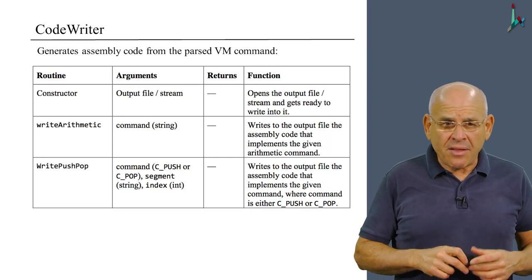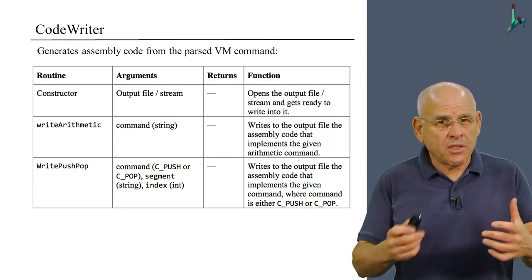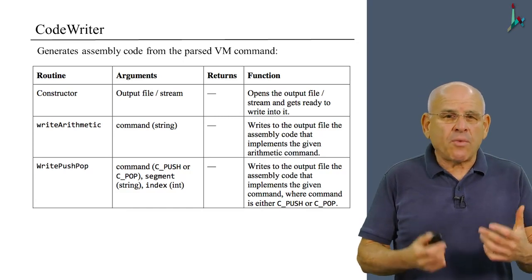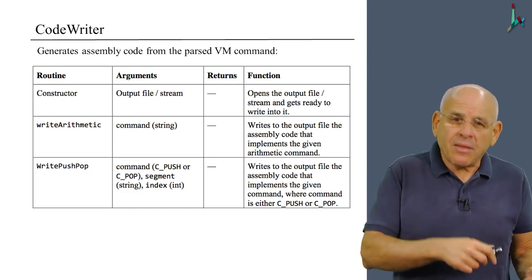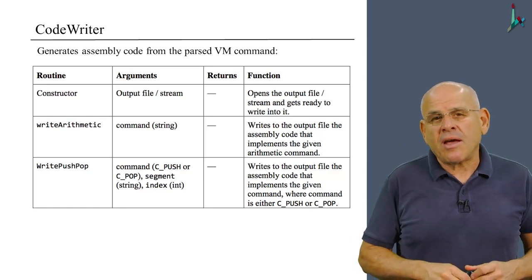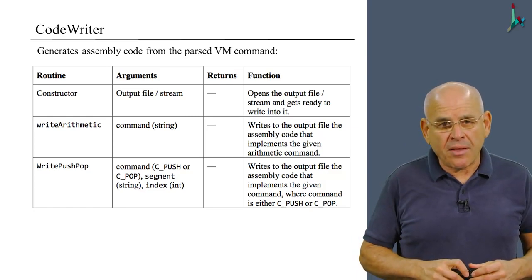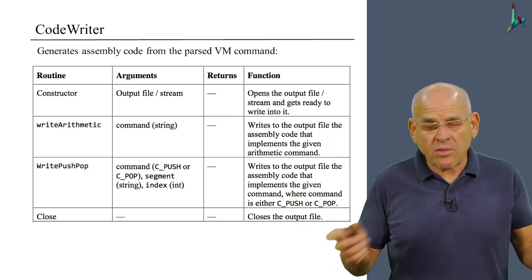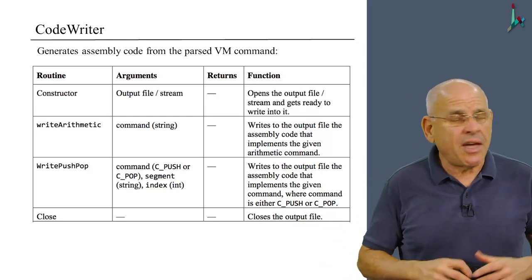And the next method, writePushPop, is also a heavyweight method, because based on whether you have a push, a pop, and the segment, and the index, you have to generate assembly code that implements this particular command. And finally, there's a close method that simply closes the output file, and that's the end of the story.